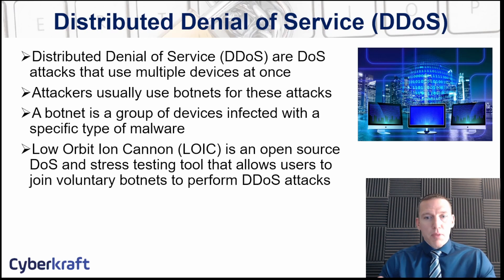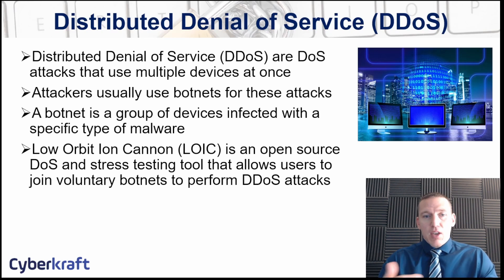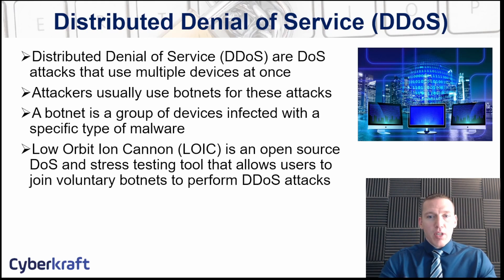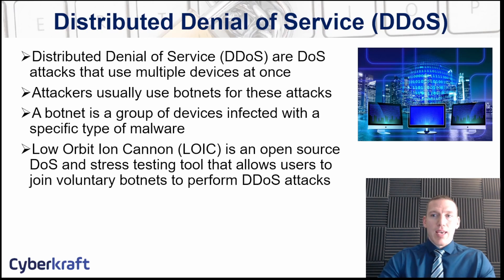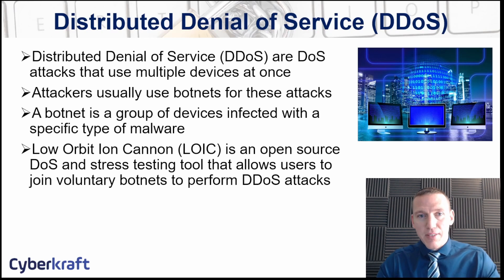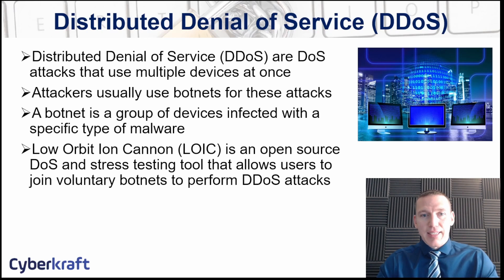There are some forms of botnets that are almost voluntary, used by organizations, hacktivists, or people trying to be part of a hacking community. For example, Low Orbit Ion Cannon is one example of open source software you can get on GitHub. You can voluntarily join it — it can be used for stress testing, but also to join a voluntary botnet used in distributed denial of service attacks, often for political or hacktivist reasons.